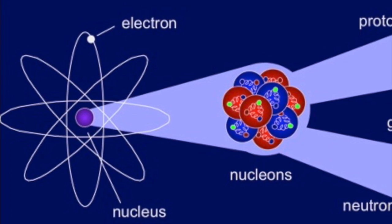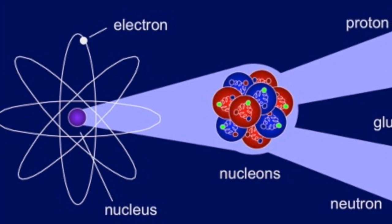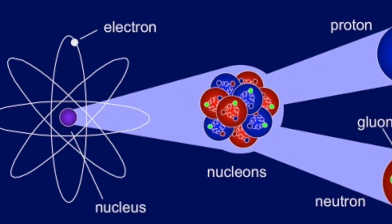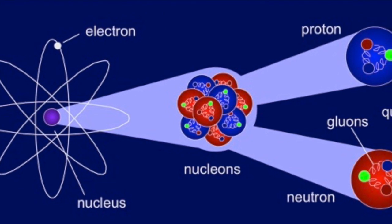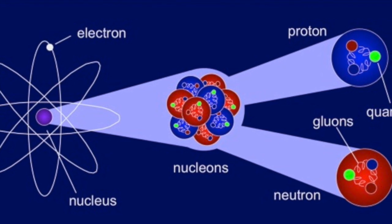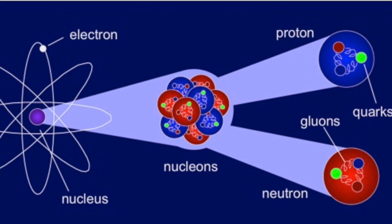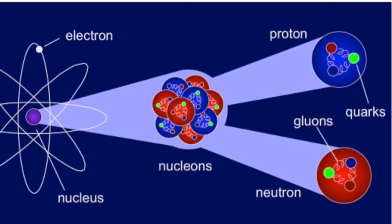Rutherford showed that the atom was composed of a nucleus and orbiting electrons. Later on, experiments showed that the nucleus was composed of neutrons and protons. Recent work showed that protons and neutrons are composed of quarks.